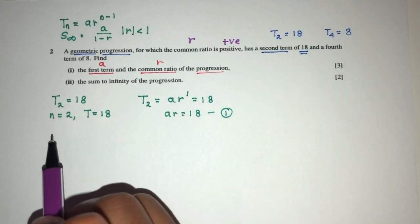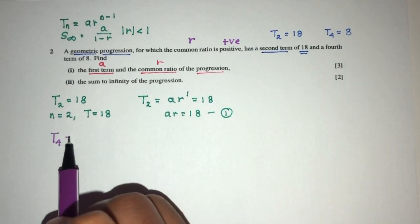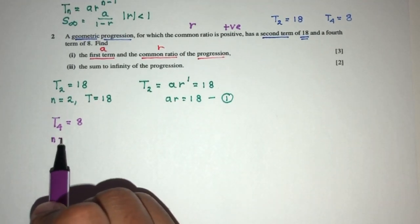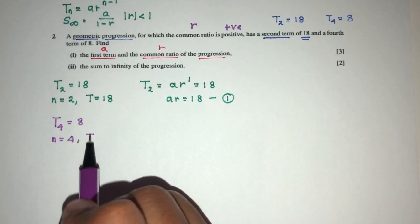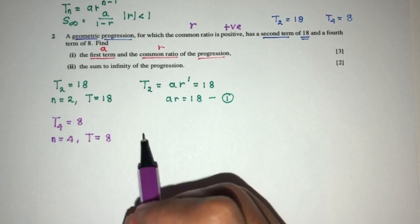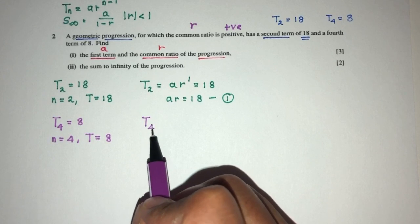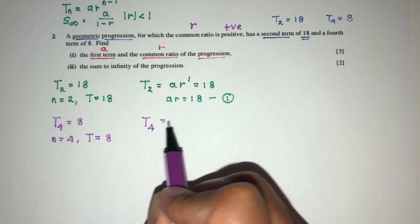The fourth term is 8. So, t4 is equal to 8. Great. When the value of n is equal to 4, the value of t is equal to the value of 8. So, term of 4, when n is equal to 4, a, we don't know,